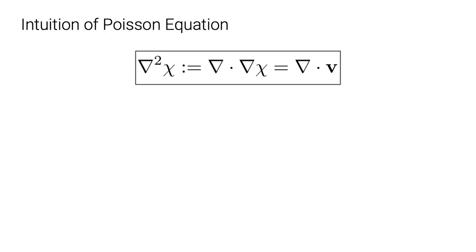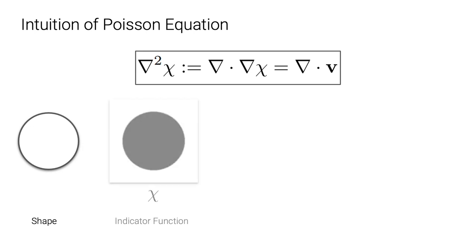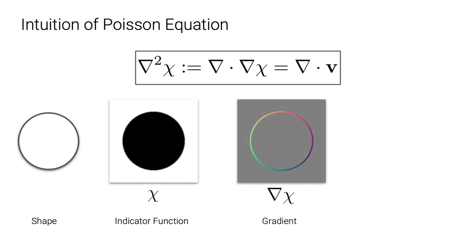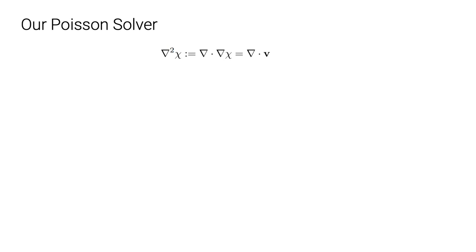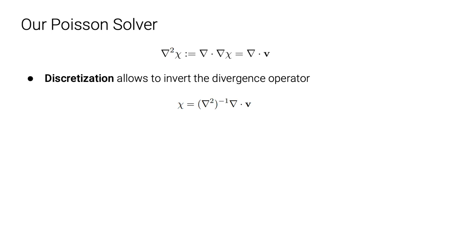Solving the Poisson equation is the cornerstone of our SAP representation. Here we provide the intuition of this equation using a 2D circle as the shape for illustration. This shape can be represented as an implicit indicator function, and here we calculate the gradient of this function. The premise of the Poisson equation is that the point normals are an approximation of the gradient. By taking the divergence operator on both sides of the equation, we can get a partial differential equation that we can solve. To solve the linear Poisson equation, we discretize the function values as well as the differential operators. In this way, solving for the indicator function amounts to inverting the divergence operator, subject to the boundary condition — that is, points on the surface having zero level set.